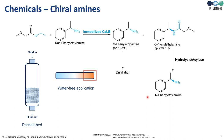Biocatalysis has found considerable use in asymmetric synthesis, given the high stereoselectivity that enzymes can have. Here is a non-conventional, water-free application using a packed bed reactor at industrial scale to make chiral amines starting from racemic amines and an acyl donor ester, again with immobilized Candida antarctica lipase B. Cal-B performs the amidation of one enantiomer, which can then be recovered as the amine by another enzyme — acylase — while the other enantiomer is separated by distillation, yielding both asymmetric amines.